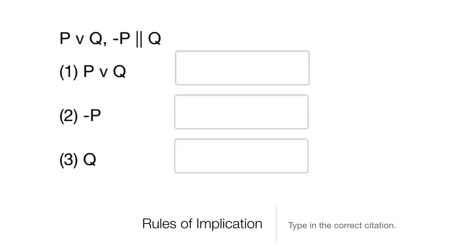Let's look at another one. We have 'P or Q' and 'not P' as premises, and they're always listed in order as they appear in the sequent — both receive 'A' as the citation for an assumption. The question is: what rule allows us to infer Q from this disjunction? That's disjunctive syllogism — we have the disjunction and the negation of one disjunct, so we infer the other. The citation is '1, 2, DS' with a space before the rule and no spaces between the numbers.